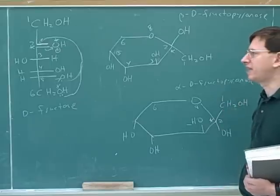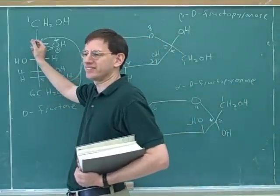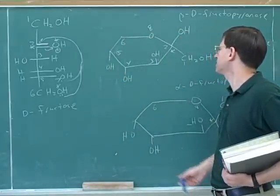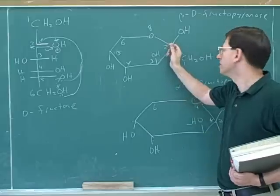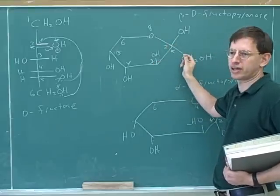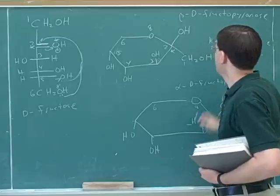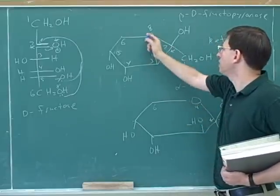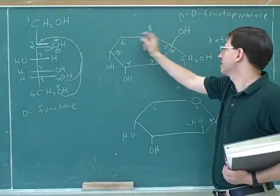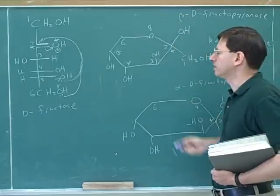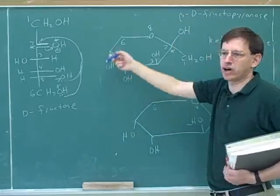Now we have a hemiketal. That makes sense because we started with a ketone. Notice that there's no hidden hydrogens on this number two. It's attached to one carbon and then another carbon. So that also tells us we should be talking about it in terms of ketone, but it's only hemi because there's one OR group. Here's the OR group in the ring and here's the OH, half and half.